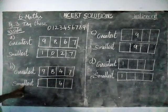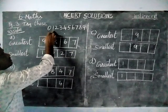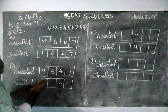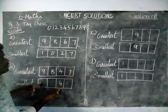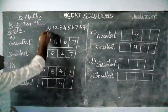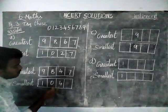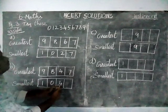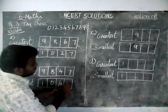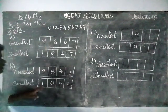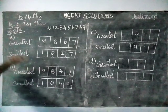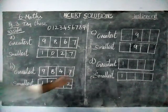Next, the smallest number. The smallest number here is 0, but we cannot write it in the first place because it will become a 3-digit number. So the first digit is 1. Next we write 0, then the already given default 4, then 2. So 1,042 is the smallest number using the given conditions.